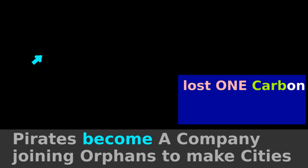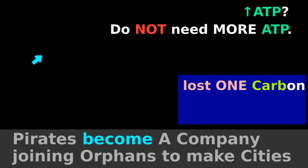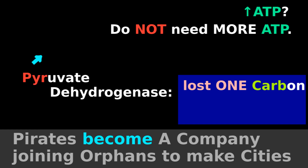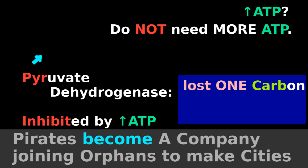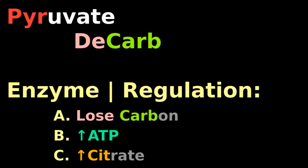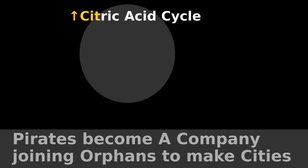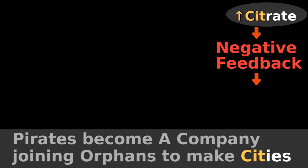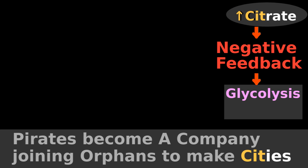If you have lots of ATP, you don't need to make even more ATP, so pyruvate dehydrogenase is inhibited by ATP. Also, if you're maxing out your citric acid cycle, you will have lots of citrate, and high citrate feeds back to slow down glycolysis at its key committed step, phosphofructokinase-1.